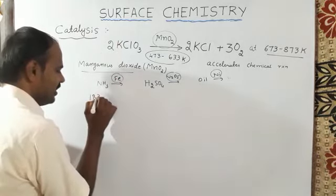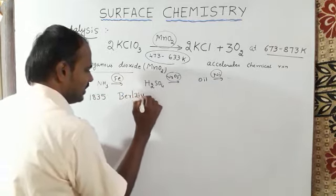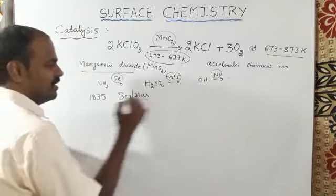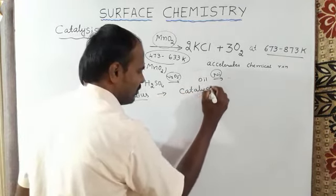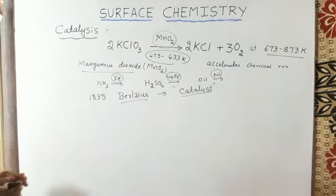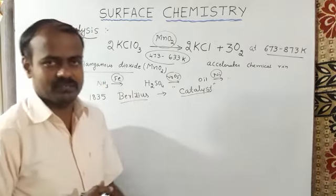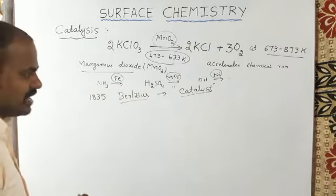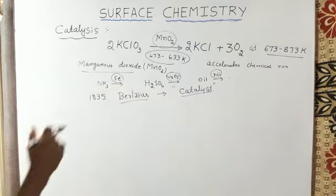In 1835, Berzelius, a scientist, proposed the definition of catalyst. A catalyst is a chemical substance which alters the rate of the chemical reaction and does not disturb any reactants and products.